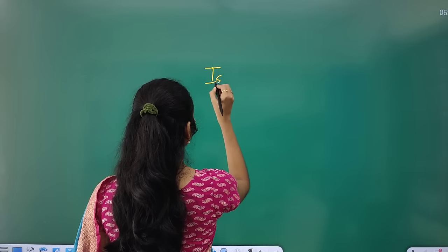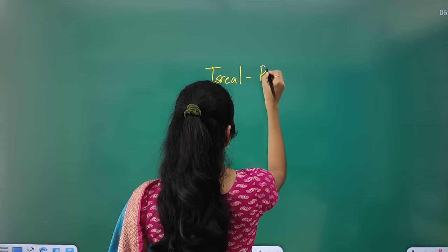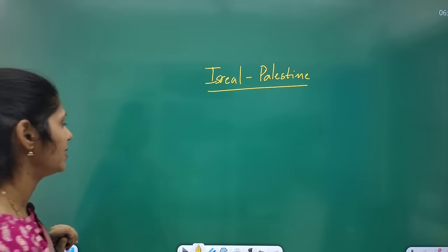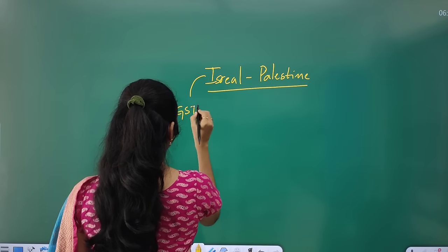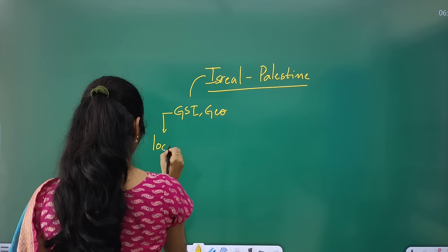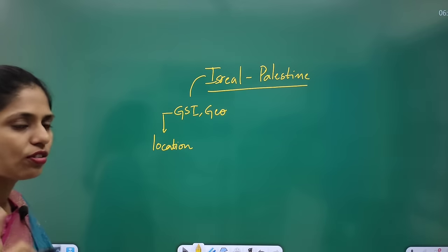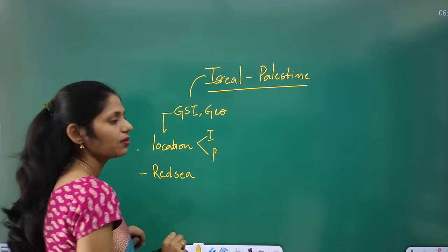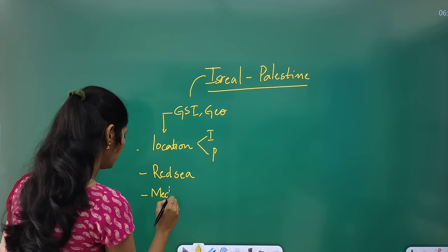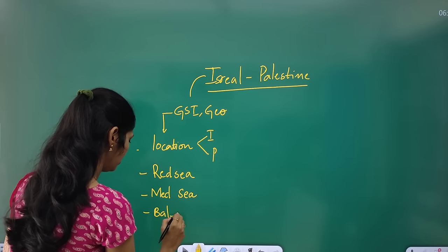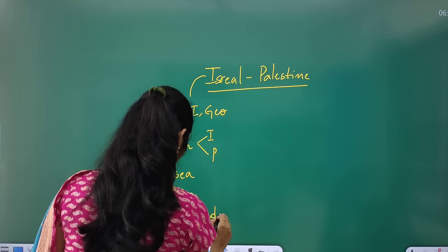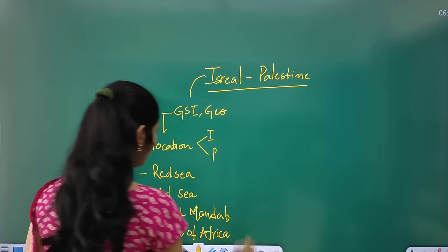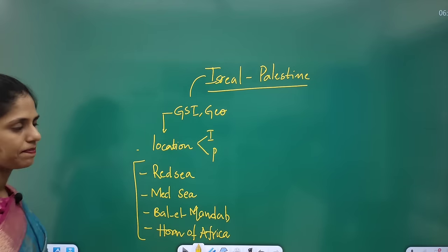This article is related to the Israel-Palestine issue. The first dimension is GS1 geography — the location of Israel and Palestine, the Red Sea and countries sharing a border with it, the Mediterranean Sea, and Bab al-Mandab. You also need to see the countries which are part of the Horn of Africa. These are the important places to study regarding this issue.